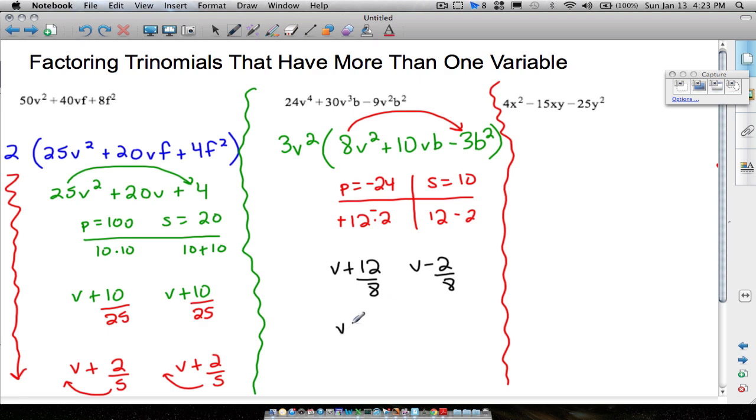When we simplify, we have v plus, dividing these by 4, we get 3 halves. And dividing these by 2, we get 1 fourth. Bring your 2 up, bring your 4 up. And don't forget to bring your 3v squared down. So we have 3v squared. Pulling that 2 up, we have 2v plus 3b. And then we have 4v minus b.